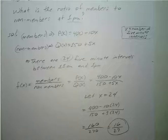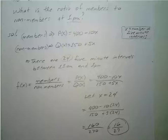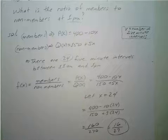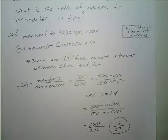By 1 p.m., there are 16 members for every 27 non-members. If you are still writing, feel free to press pause, but we're going to go ahead and move on to our next example.